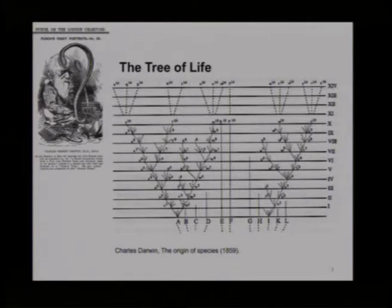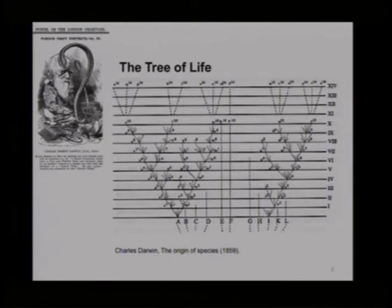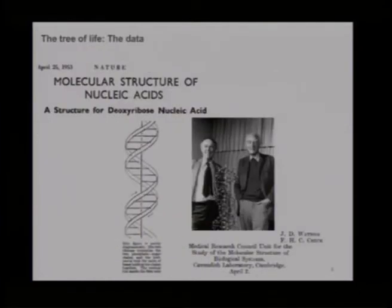This is how Darwin drew the tree of life. We have here nodes and branches; we have some extant species shown as dashed lines; branches represent vertical inheritance; and we have the external nodes — those are the species we see on earth today. In 1953 Watson and Crick proposed the double helix structure of DNA, for which they received the Nobel Prize in 1962.